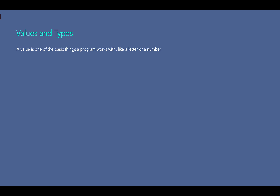As you remember in our previous lecture, we printed out 'Hello World' to the console. Here, 'Hello World' is a value and the type of this value is string. This piece of text in programming language is known as a string. A string is a sequence of characters.